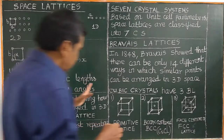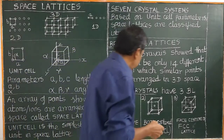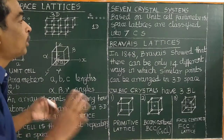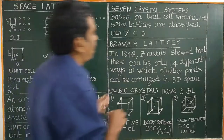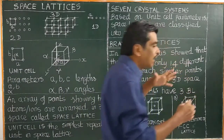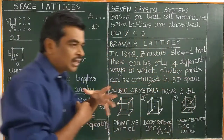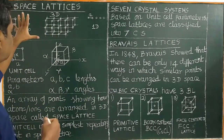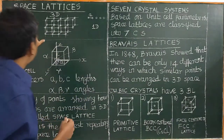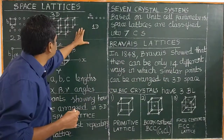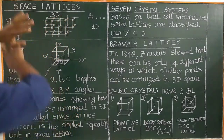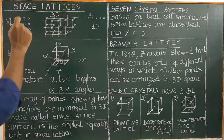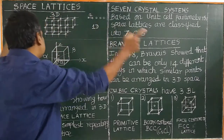In the cubic crystal system, there are three Bravais lattices. This is an array of points showing how the atoms, ions, or molecules are arranged in three-dimensional space.